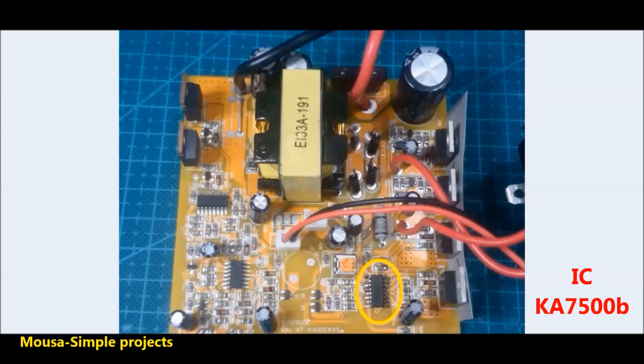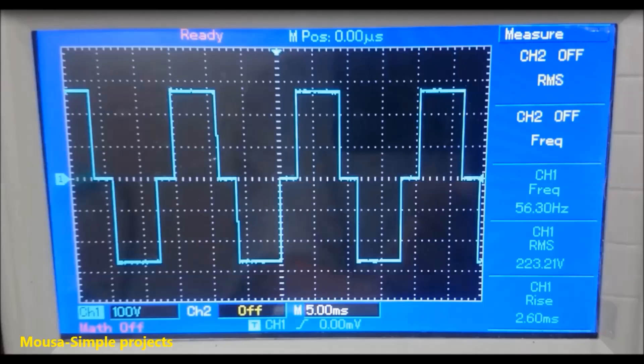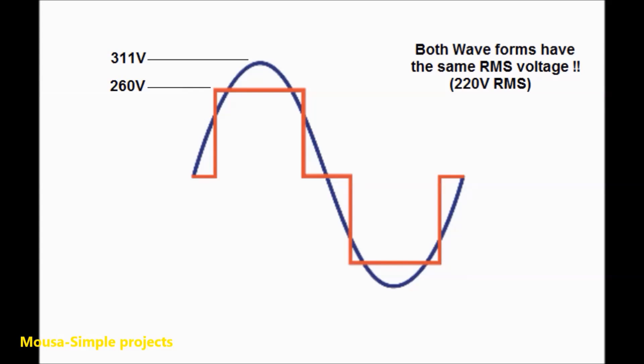Then we are going to convert this square inverter to pure sine wave inverter. The first problem due to this conversion is the peak voltage. Assuming we have two AC waveforms with the same frequency.